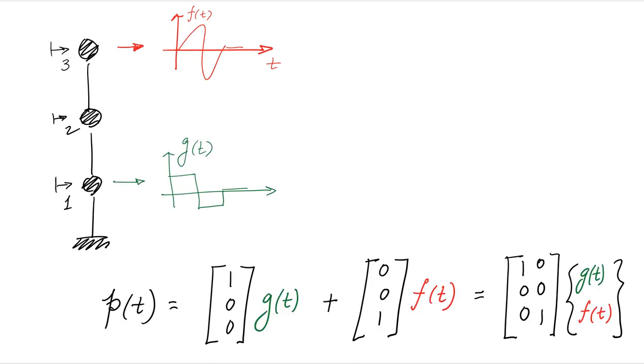If you have the same system, but it's subject to two different loads, we can simply superimpose their effects. And so in this case, we have g of t acting in degree of freedom 1, and we have f of t acting in degree of freedom 3. If we combine these two columns, we get a matrix, and then a load vector as shown here on the right. And you can generalize this for any case.